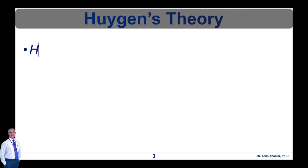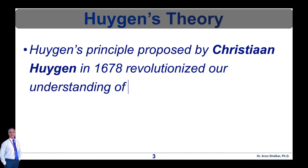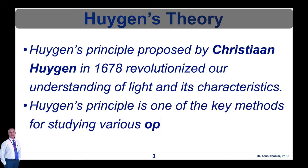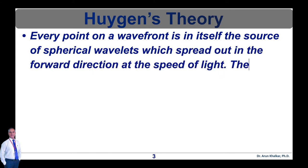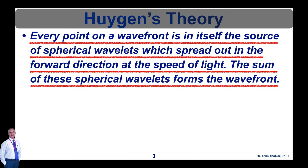Huygens' principle, proposed by Christian Huygens in 1678, revolutionized our understanding of light and its characteristics. You may be familiar with the rectilinear theory of light, which purports that light travels along straight paths. Huygens' principle is a method of analysis applied to problems of wave propagation both in the far field limit and in near field diffraction and reflection. It states that every point on a wave front is itself the source of spherical wavelets which spread out in the forward direction at the speed of light, and the sum of these spherical wavelets forms the wave front. The new wave front is the tangential surface to all of these secondary wavelets.